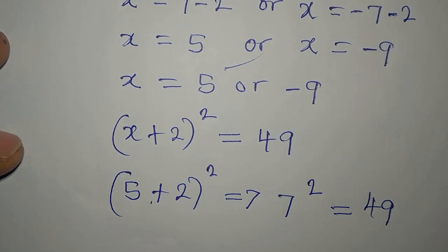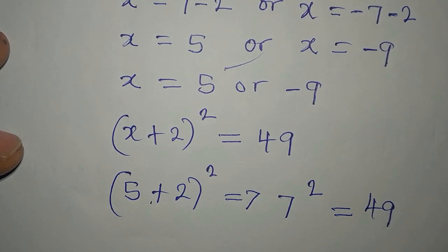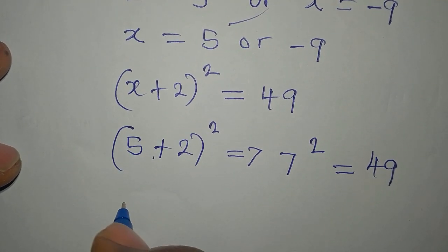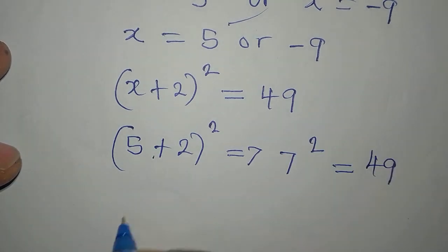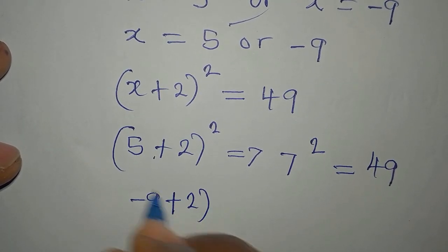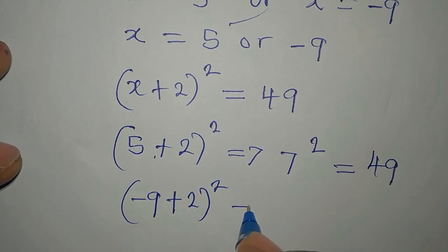This value of x is satisfying. Now we go to the second value of x, and that will be -9. So I have (-9 + 2)².